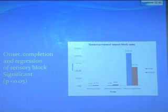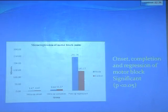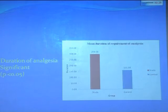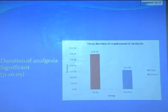Post-operative regression was slower in the study group, meaning patients had a longer duration of block. Similar significant results were observed for motor block — onset was quicker and post-operative regression was slower in the nalbuphine group. The duration of analgesia also showed significance: the study group had approximately 298 minutes of analgesia compared to only 161 minutes in the control group.